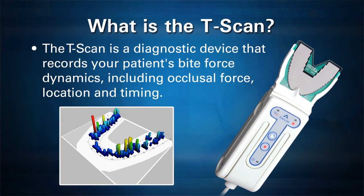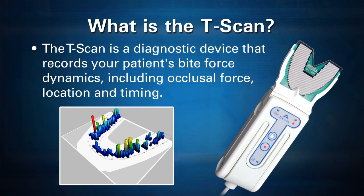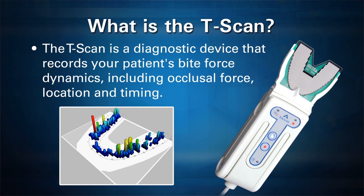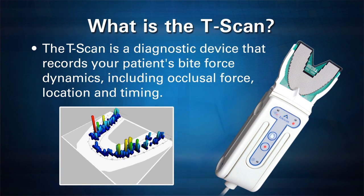The T-Scan is a diagnostic device that measures relative biting forces, including occlusal force, timing, and location. The technology was invented by Dr. William Maness in 1987 at Tufts University and MIT.